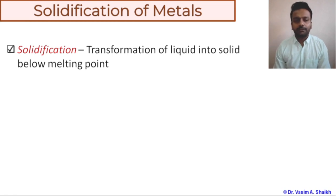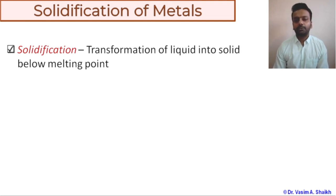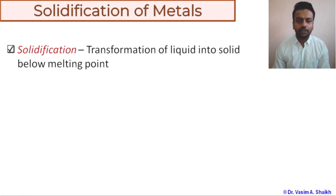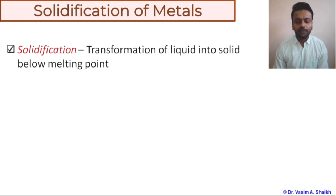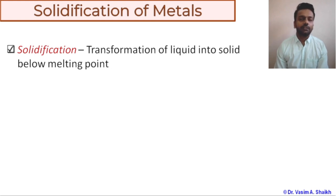Solidification is nothing but a transformation of liquid into solid below the melting point. In today's world, solidification is still the most important manufacturing process. Several tons of steel, aluminum alloy, and copper are produced through the process of casting, where we need to solidify a material from liquid. When we solidify a material from liquid to solid, we can get either a final product or a raw material. Solidification is the primary processing step to produce metallic slabs and ingots.